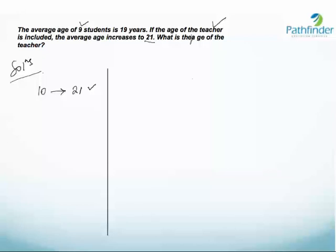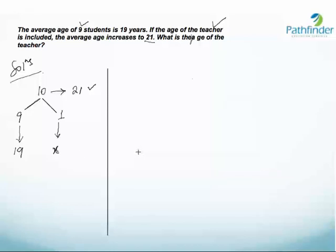These 10 people are divided into two groups. The first group has 9 students whose average age is 19 years, and the second group has 1 person — the teacher — whose age is not known to us. We will first calculate the deviation on these 9 students, and then we will be able to identify the deviation on the age of the teacher.